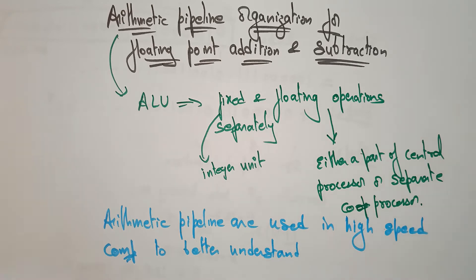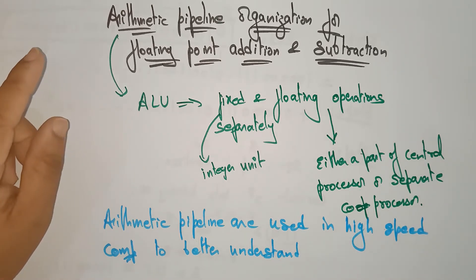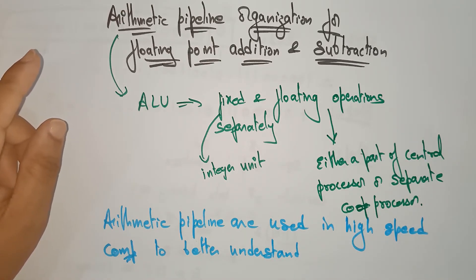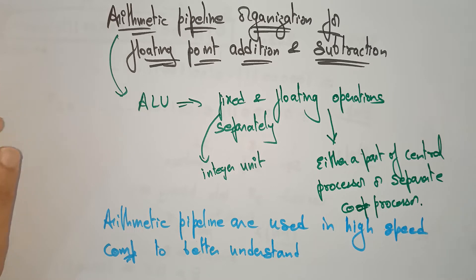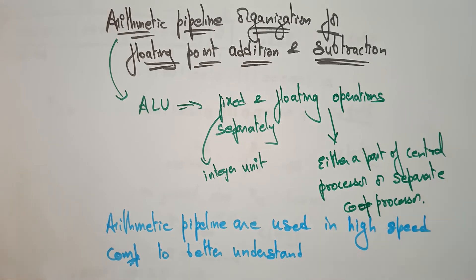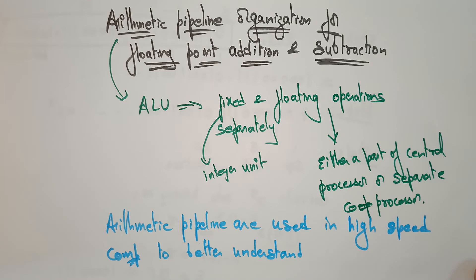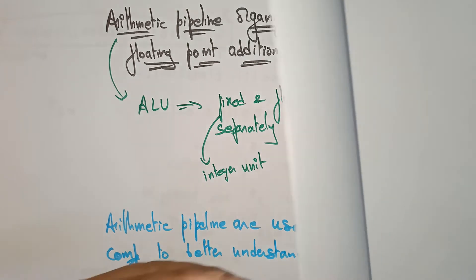Now let us consider an example for this arithmetic pipeline unit for floating point addition and subtraction. This arithmetic pipeline mainly performs fixed and floating point operations in a pipeline manner, and it is used for high-speed computers.